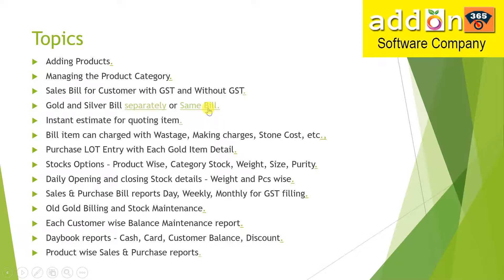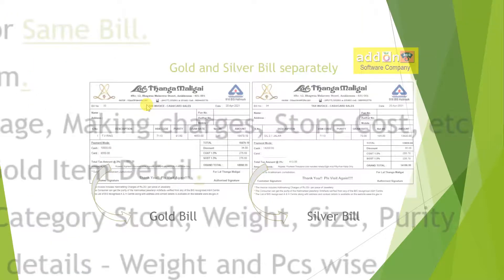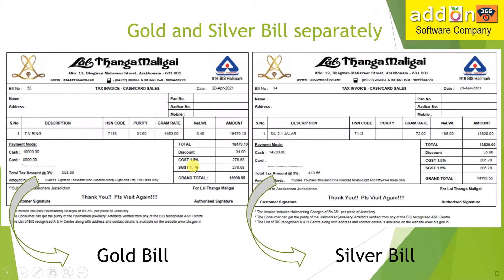If you can find the same bill, if the customer has specific contracts to the area, then it will be the same bill. The first one is the separate item. Here is the gold item. For gold, there is a separate number — a separate bill.